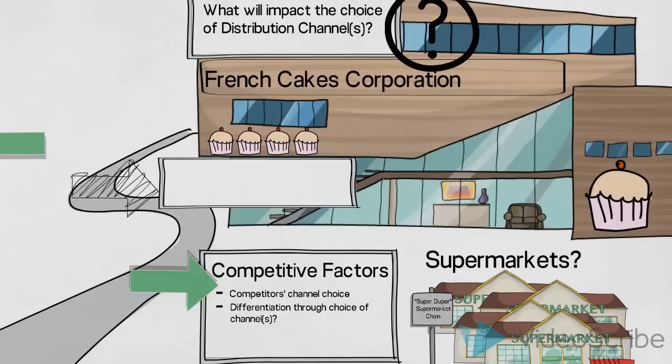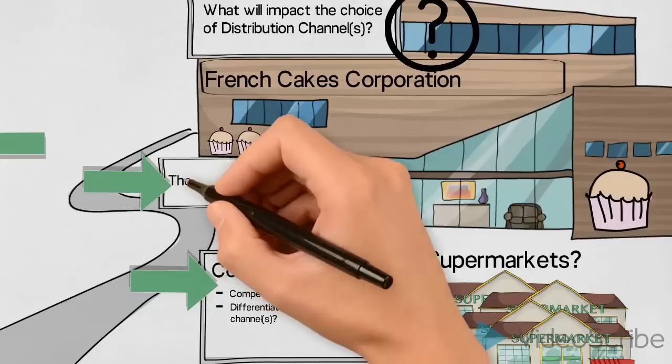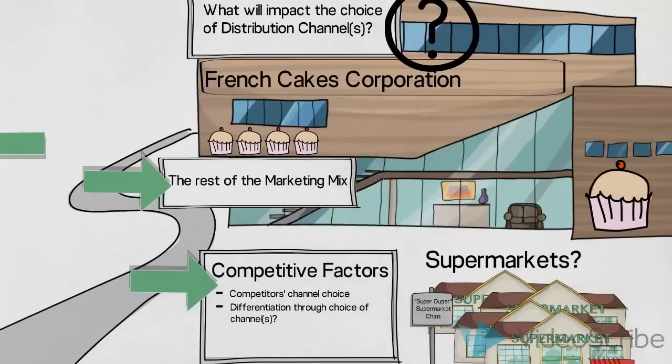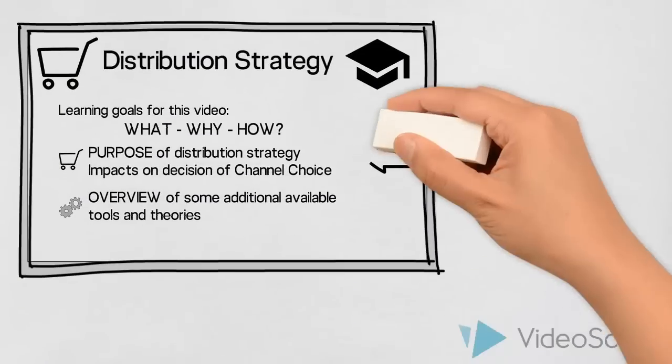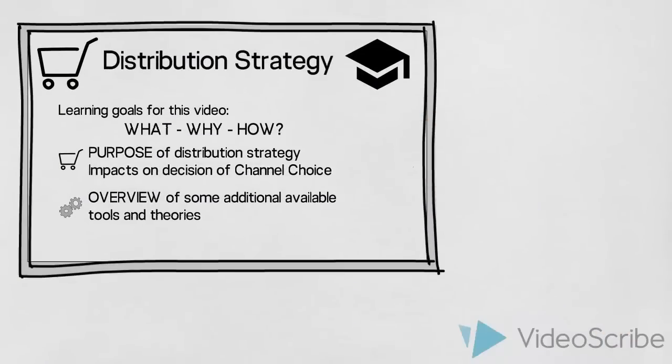And finally, we would look at the rest of the marketing mix, to ensure that the choice of place corresponds with how French Cakes Corporation wishes to be positioned in the minds of the customers. We have now established the purpose of distribution strategy, what it is and why we need to know about it.